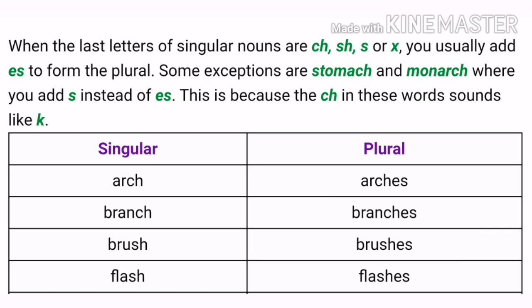Flash — this word also ends with the letters SH, so we added ES. Remember: when a noun ends with CH, SH, S, or X, we need to add ES, and the singular noun will become plural. Some exceptions are stomach and monarch — these words end with the sound K, so we need to add S instead of ES.